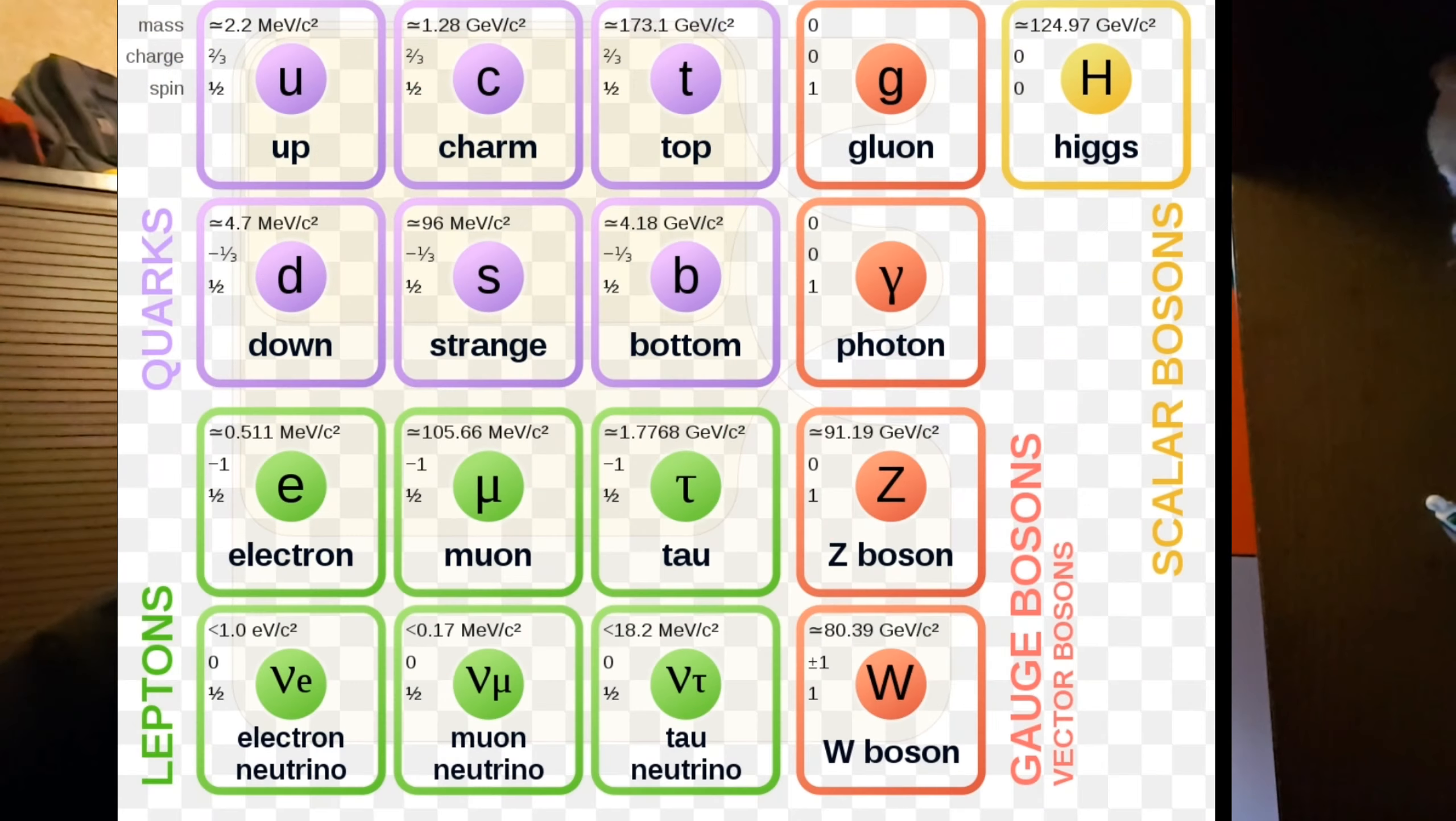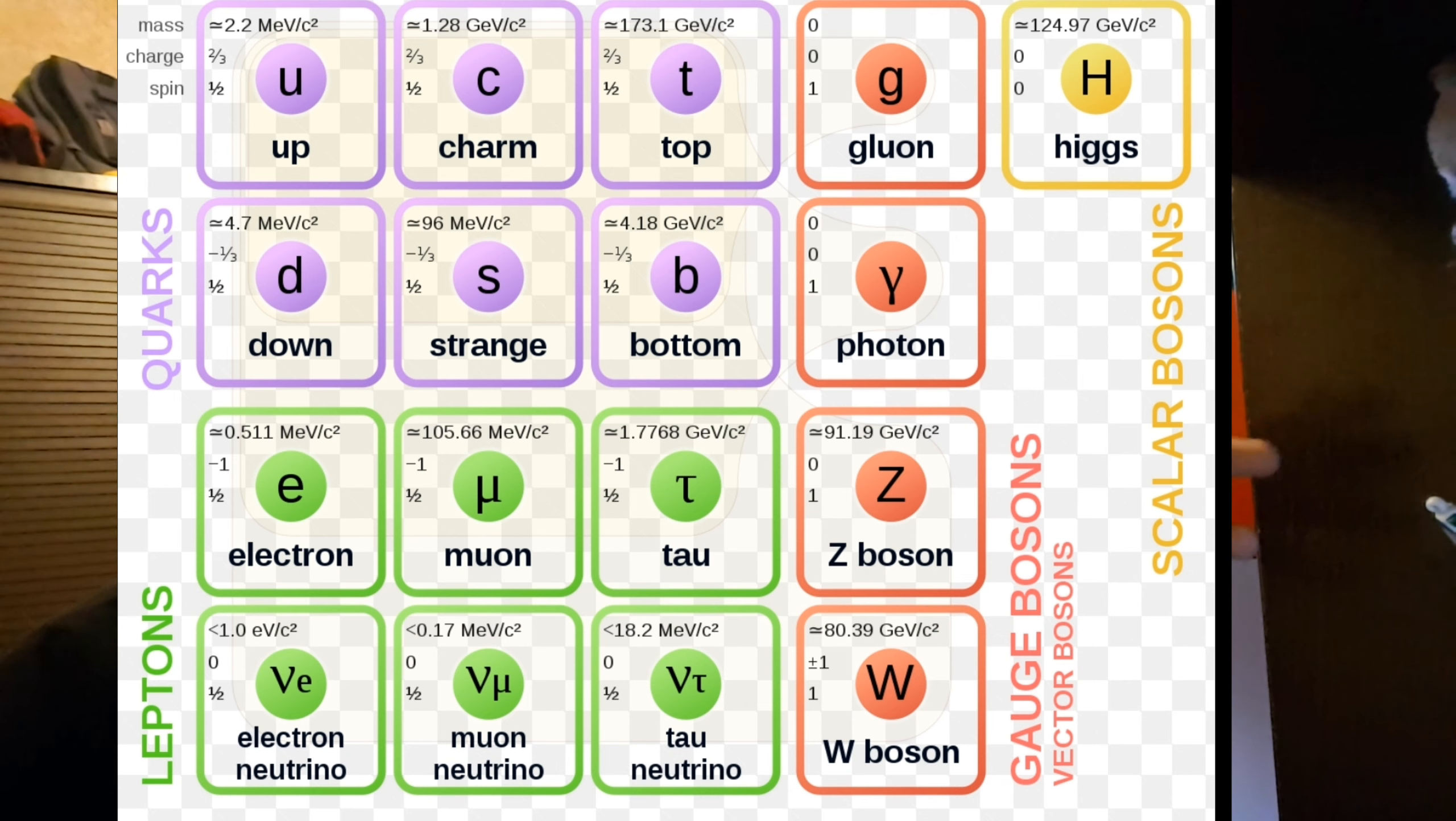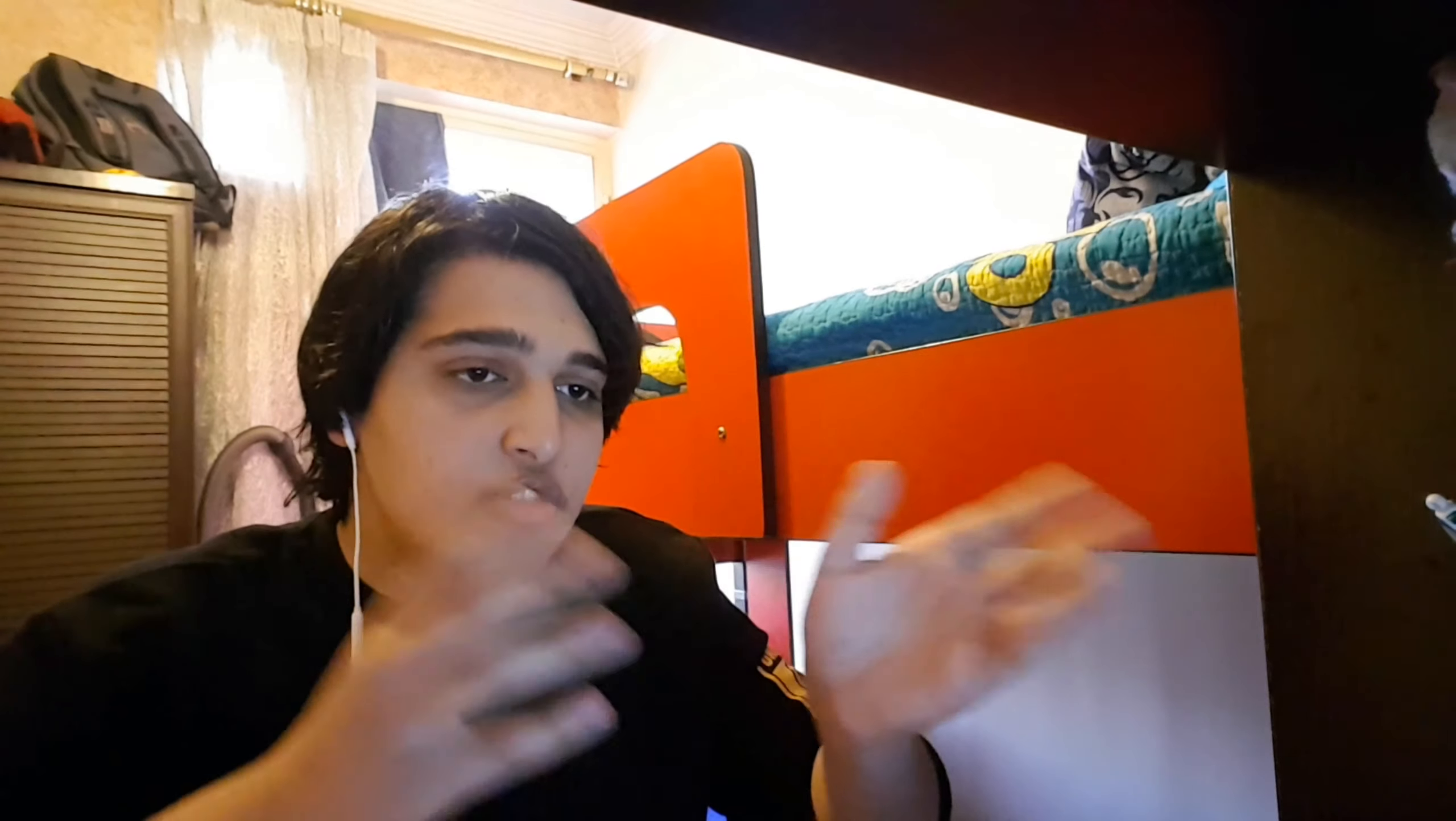After the development in the field of quantum science and particle science, scientists were able to create a table model of particles by explaining in it all kinds of particles which form and explain to us the mechanism of the universe. The table is divided into two main parts.